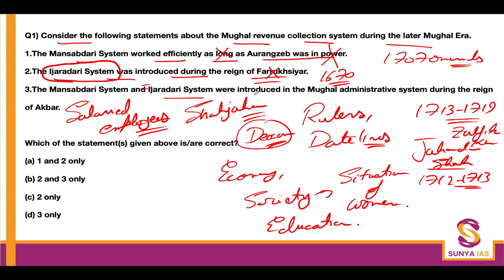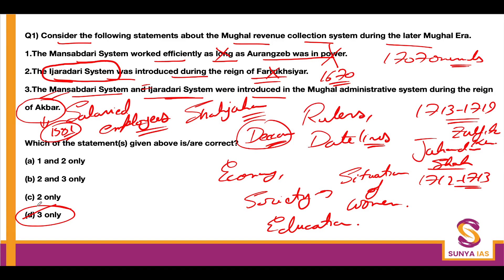The third statement says the Mansabdari system and Ijara-e-Dari system were introduced into the Mughal administrative system during the reign of Akbar. Both were indeed part of the tax revenue systems of the Mughals — introduced at the time of Akbar by Todermal in 1581. So the third statement is correct; the other two are wrong. The answer is option D — only statement three is correct.